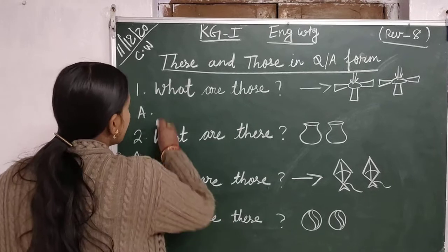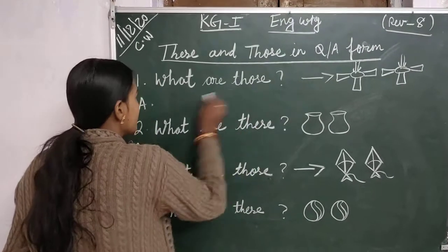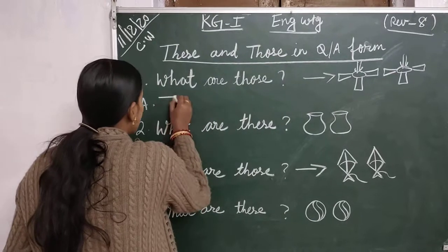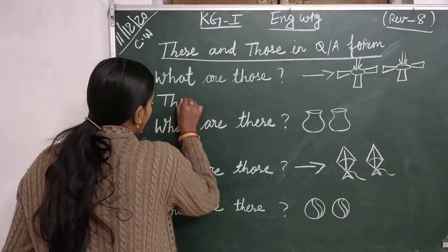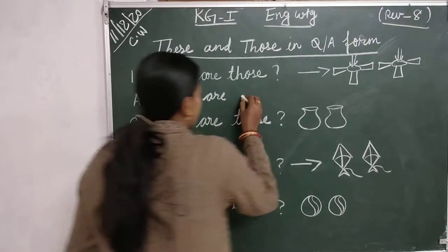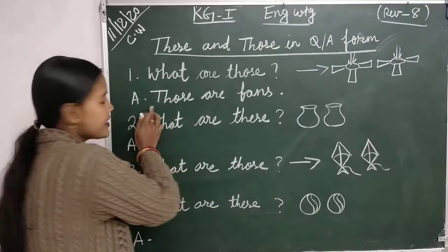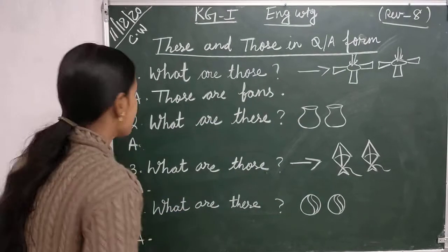First number question is what are those? Look at the blackboard. What are those? Answer is those are fans. Those are fans.